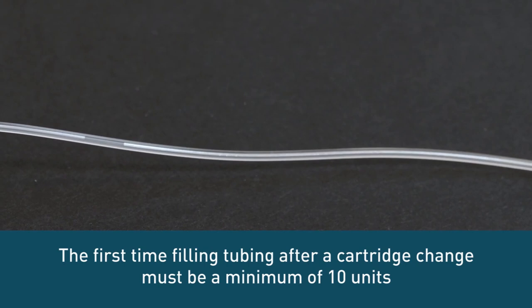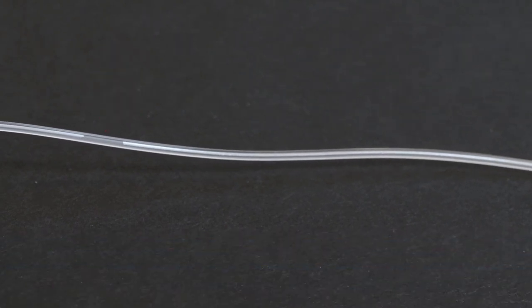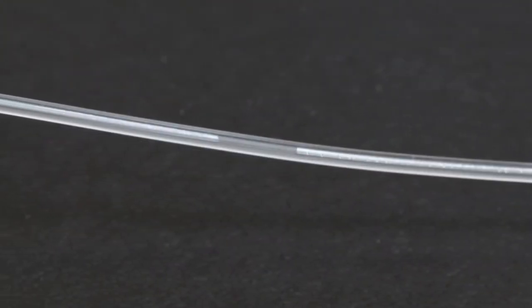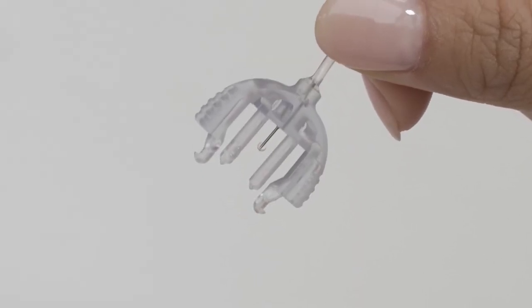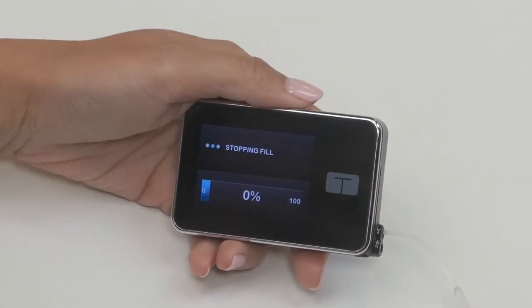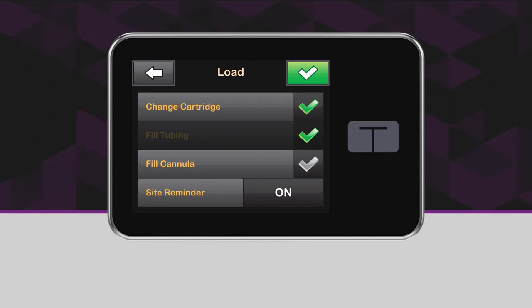Very tiny ones aren't a concern, but anything larger should be pumped out. Even though air bubbles themselves will not harm you, there could be a risk of high blood sugar if air is infused in place of insulin. Once you notice three drops come out of the end of the tubing and you're satisfied that there are no large air bubbles left, tap Stop. Your pump will ask you to confirm that you saw drops at the end of the tubing. If you saw drops, tap Done. If you stop the fill process before you saw drops, tap Fill to continue. You have now successfully filled your tubing.